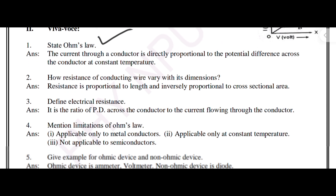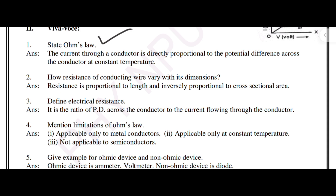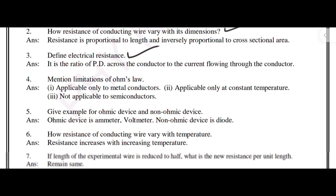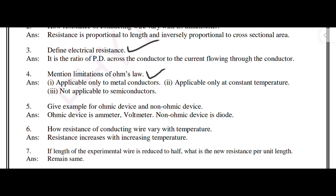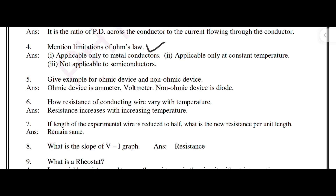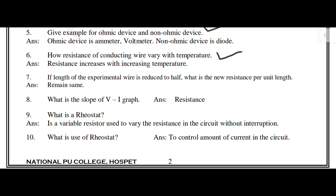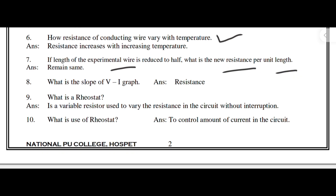State Ohm's law. How does resistance of a conducting wire vary with its dimensions? Define electrical resistance. Mention the limitations of Ohm's law. Give examples of ohmic and non-ohmic devices. How does resistance of a conducting wire vary with temperature? If the length of the experimental wire is reduced to half, what is the new resistance per unit length? What is a rheostat and what is its use?